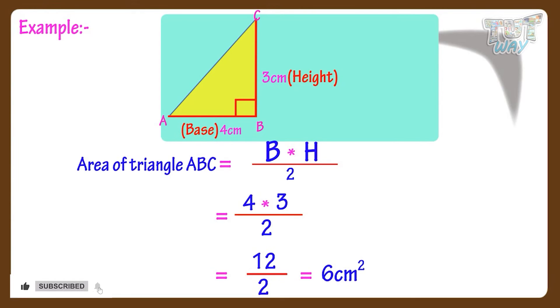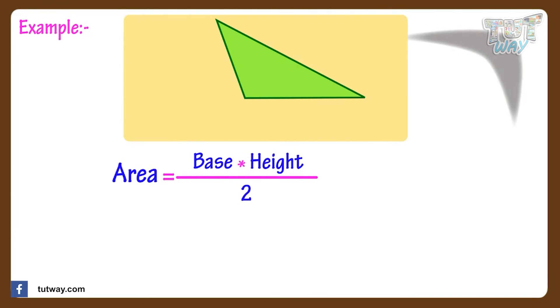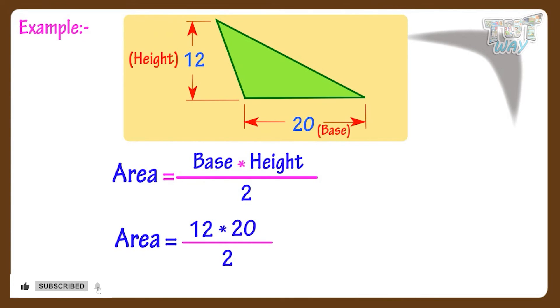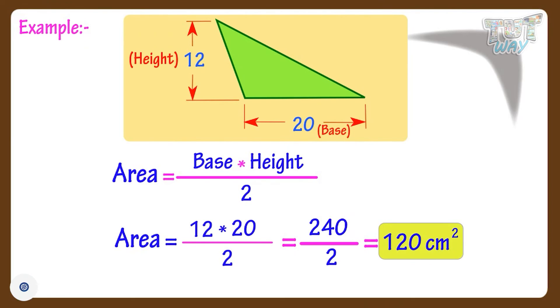So kids, any side of a triangle can be a base on which the perpendicular is drawn. Now let's find the area of another triangle. Here we have a triangle and we have to find its area. Area is base multiplied by height divided by 2. Here the height is 12 centimeters and the base is 20 centimeters. So area equals 12 multiplied by 20 divided by 2 — 12 multiplied by 20 equals 240, and 240 divided by 2 we get 120. So the area is 120 centimeters squared.